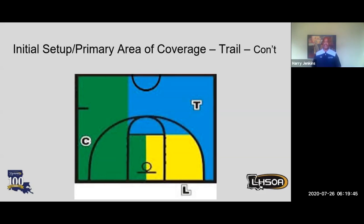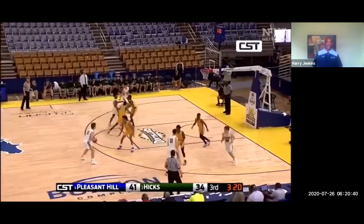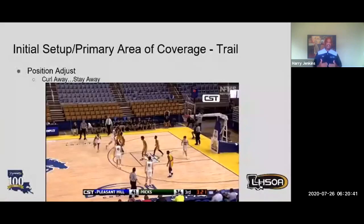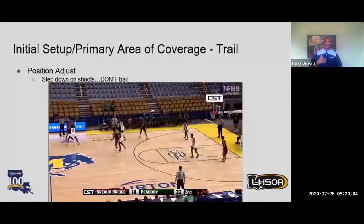Trail is also responsible for chopping the clock on all front court throw-ins, whether the throw-in is initiated by lead or by trail — they chop the clock. Trail is also responsible for goal tending and basket interference. We need to step down on every shot, whether it's a free throw or field goal attempt. Don't bail — stay engaged.